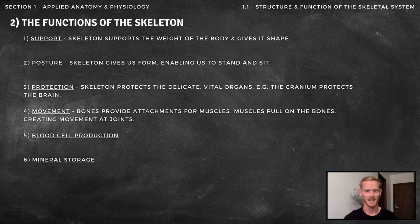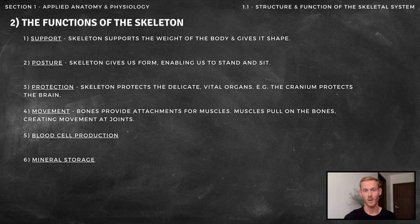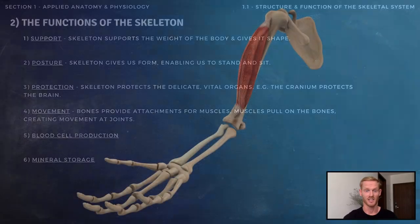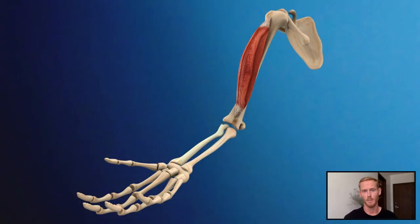The skeleton allows for movement, as the bones provide attachments for muscles, so that when the muscles contract, they use the bones as levers, creating movement at joints. For example, when performing a bicep curl, the bicep muscle pulls on the radius bone in the forearm, causing flexion at the elbow.